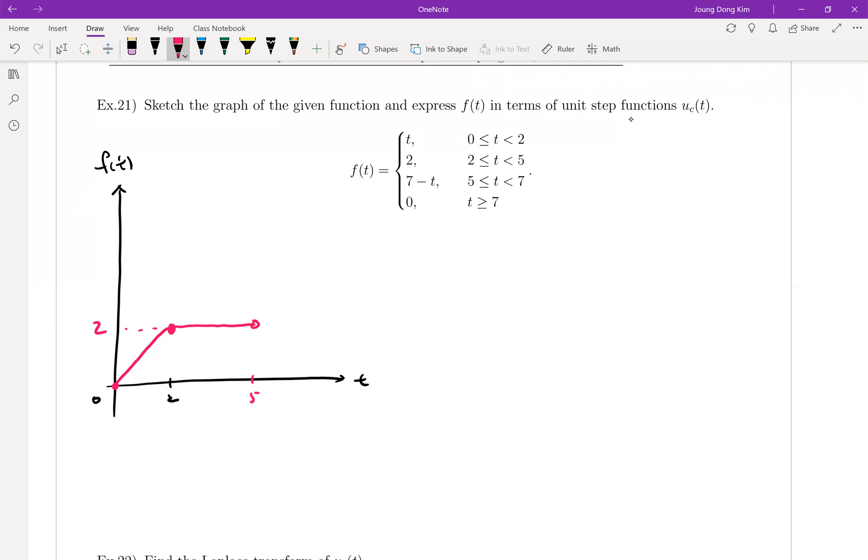And 5 to 7, it is also a straight line. When you plug in 5, it's 2, and plug in 7, it's 0, right? And then like that. So how can you write this one in terms of unit step function? It's easy.